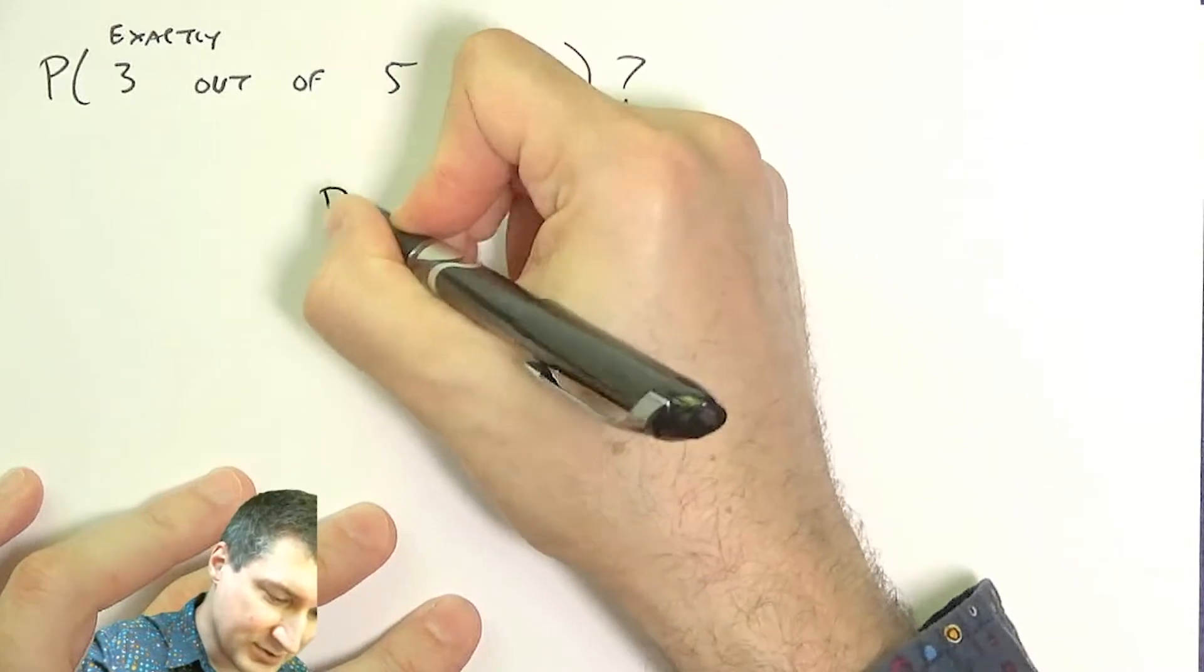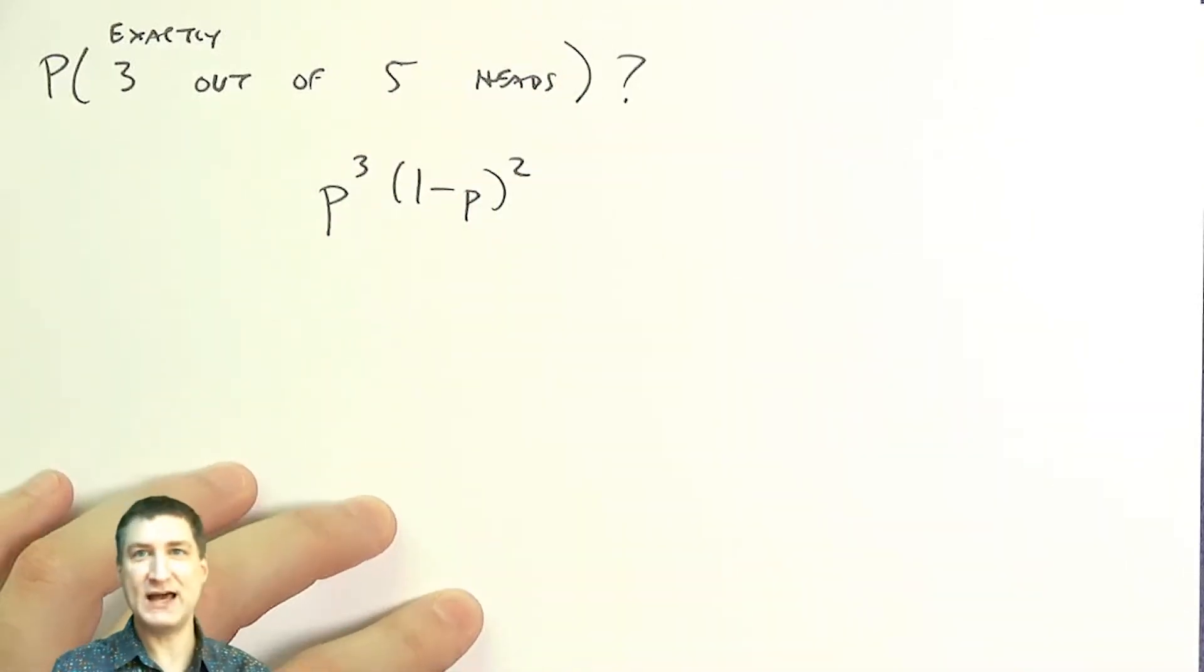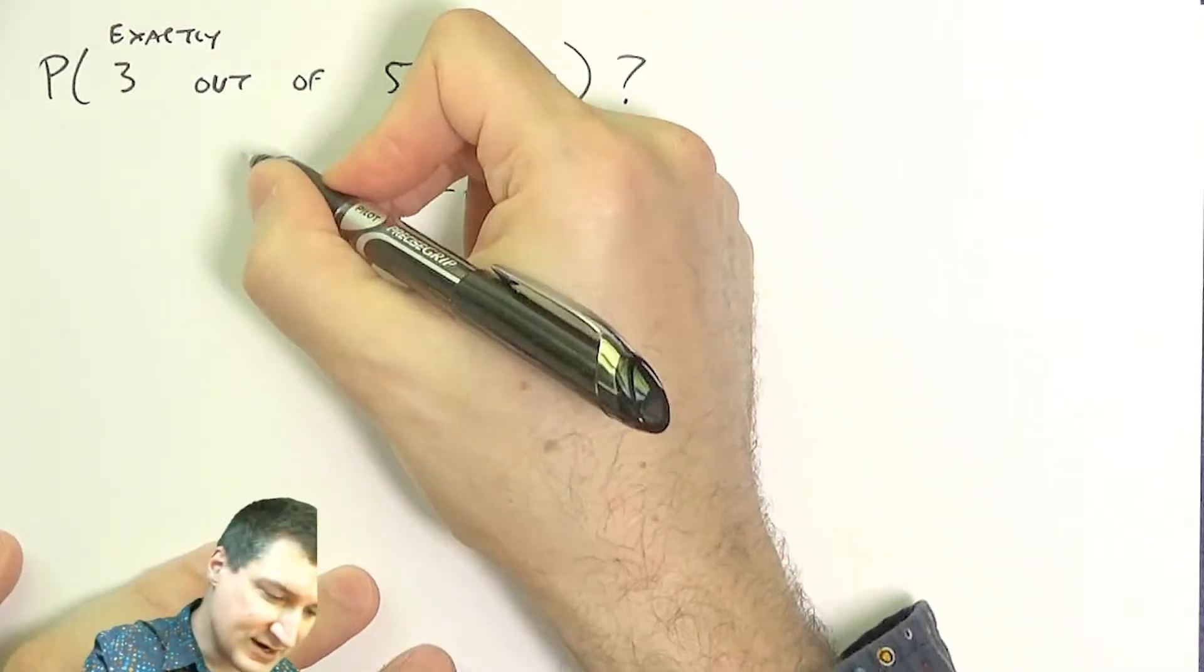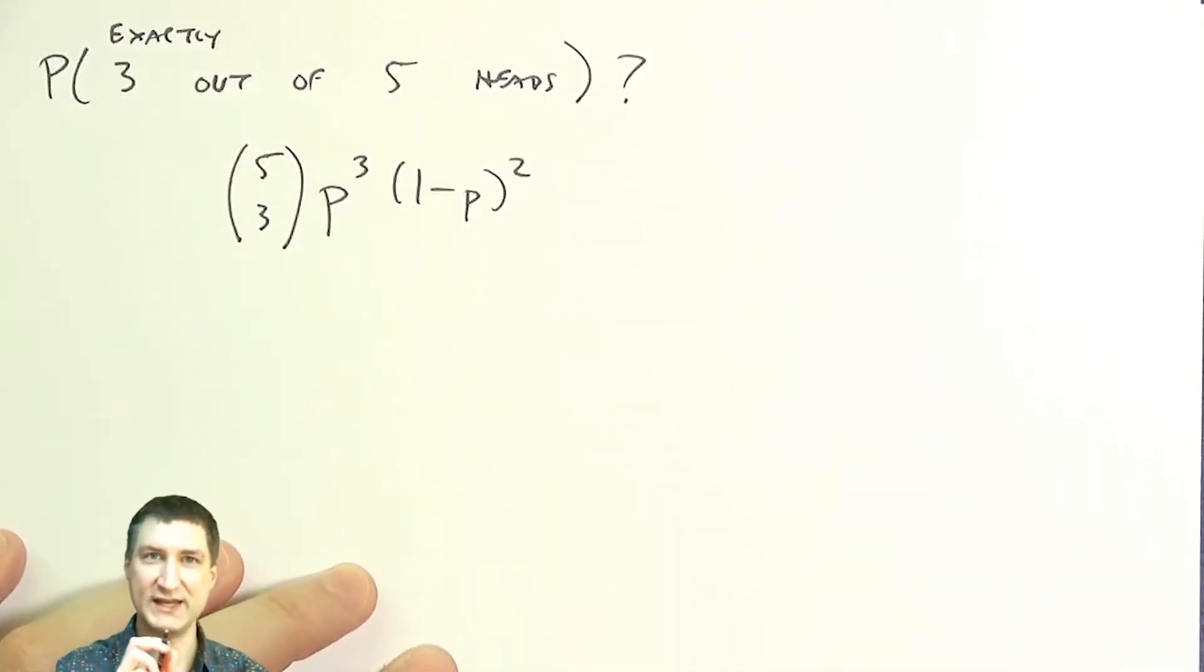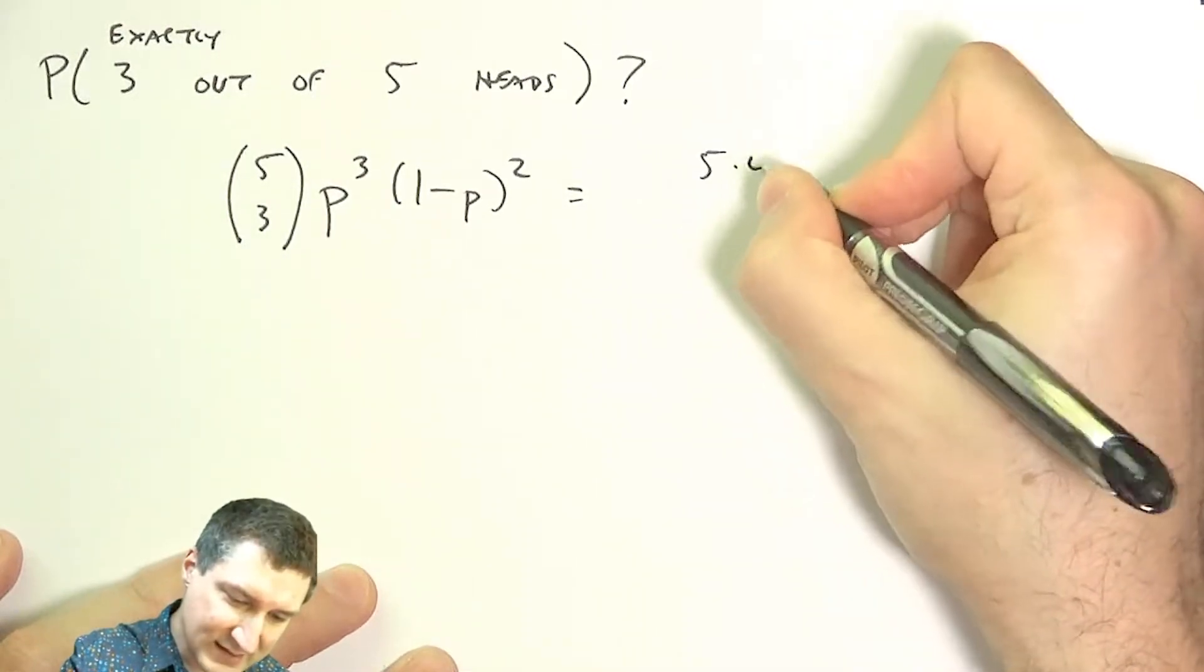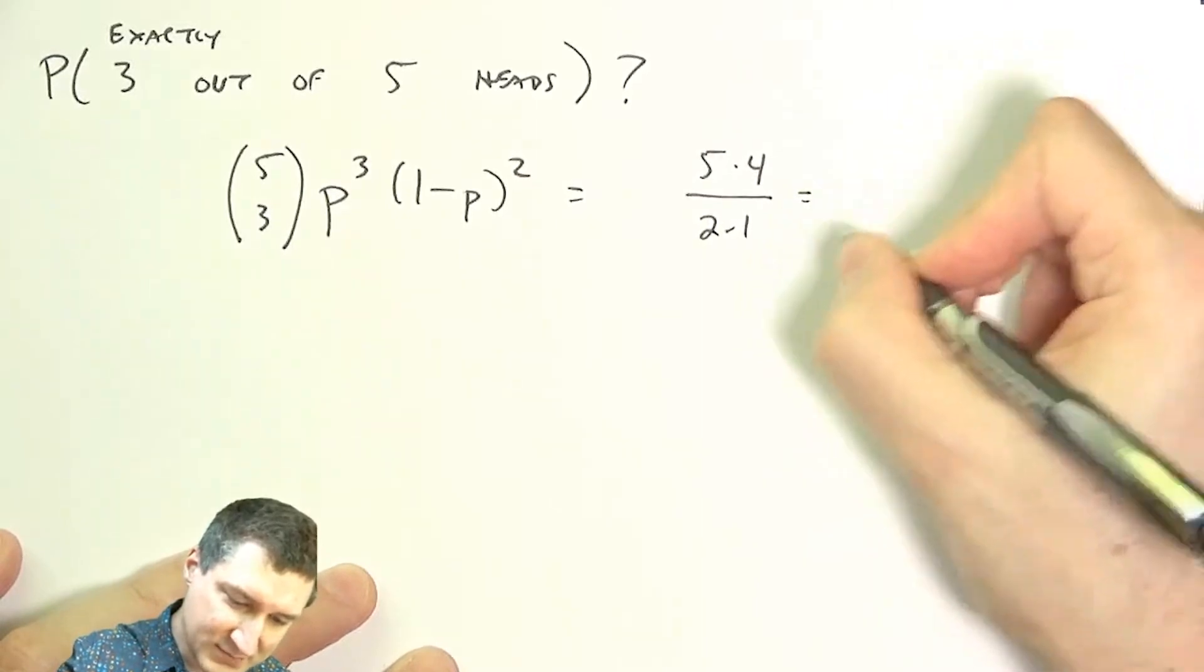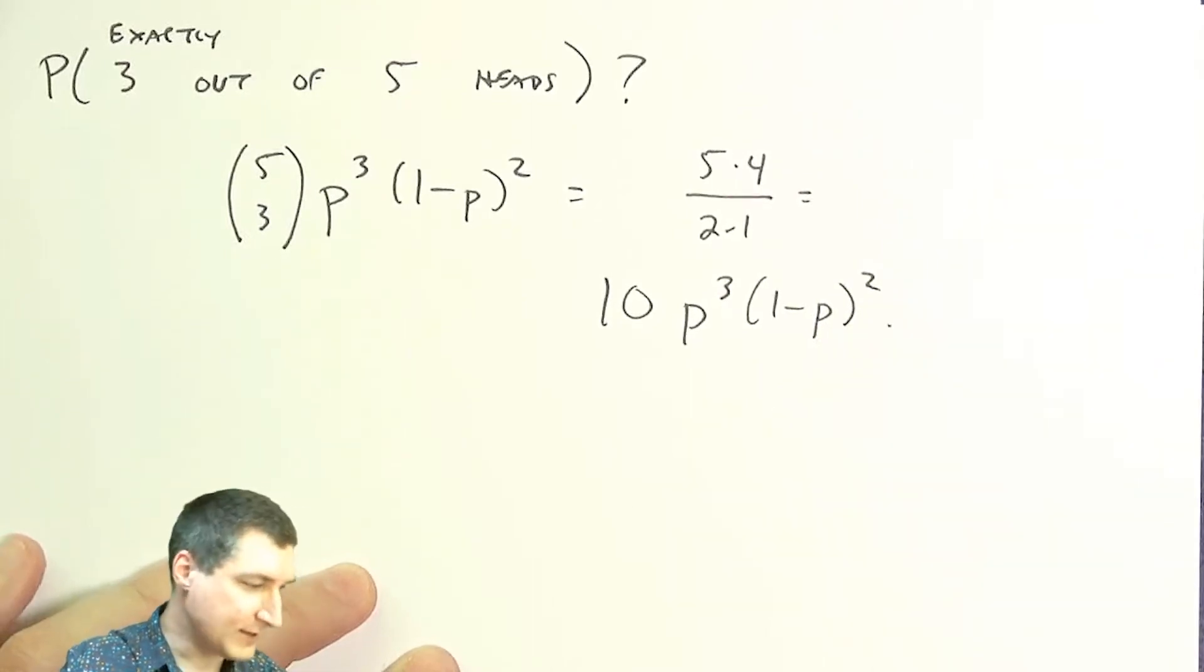Now we're back to combinatorics from a few lectures ago. Each one of these outcomes has probability p cubed times one minus p squared. Now I have to ask: how many ways are there to assign the positions of those three heads? There's five choose three ways of getting exactly three heads. Five choose three is five times four over two times one, so it's going to be ten times whatever this probability is.